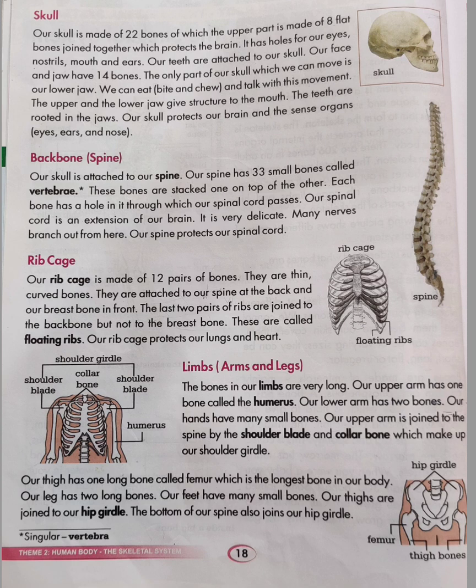Moving ahead, we have the backbone, which is the spine. Our skull is attached to our spine. Our spine has 33 small bones called vertebrae. These bones are stacked one on top of the other. Each bone has a hole in it through which our spinal cord passes. Our spinal cord is an extension of our brain — it is very delicate. Many nerves branch out from here. Our spine protects our spinal cord.